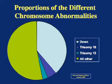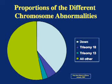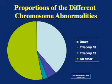This pie chart illustrates the proportions of the different chromosome abnormalities. Down syndrome is by far the most common. All the other possible combinations make up about 54% of all chromosome abnormalities. Individually, these conditions are rare — some being unique to a single person — but collectively, this represents a large number of people.